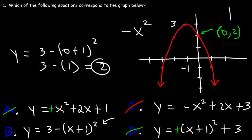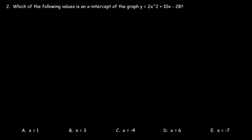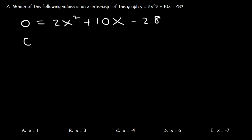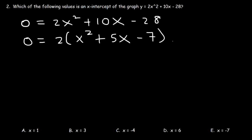Number two: which of the following values is an x-intercept of y equals 2x squared plus 10x minus 28? To find the x-intercept, replace y with 0 and solve for x. We can factor out the GCF of 2, leaving x squared plus 5x minus 14.